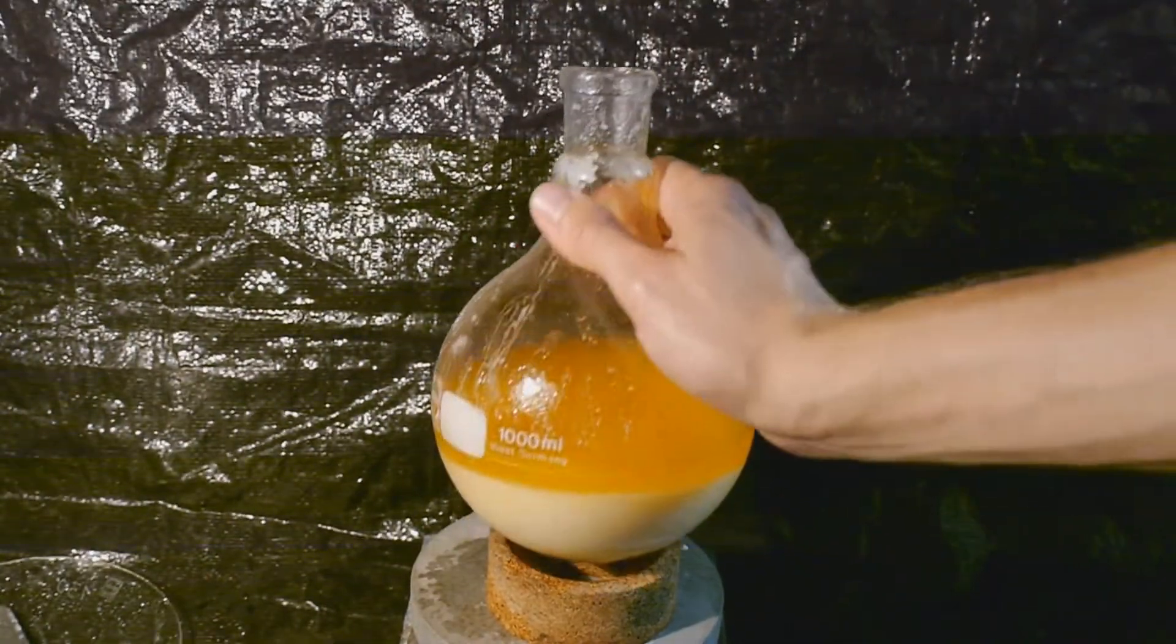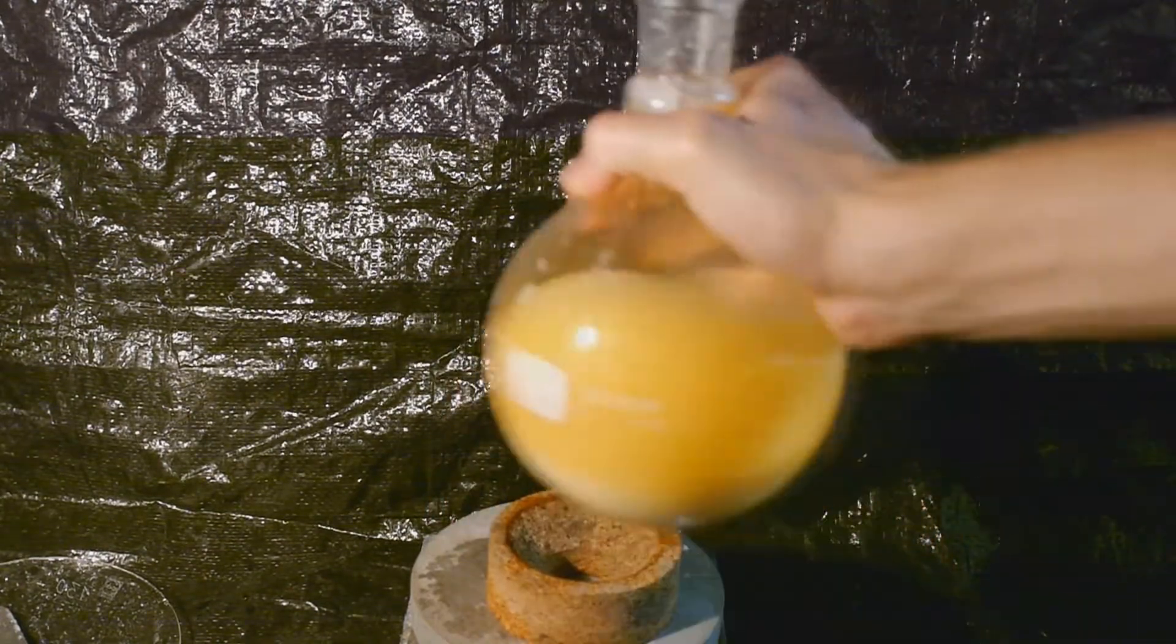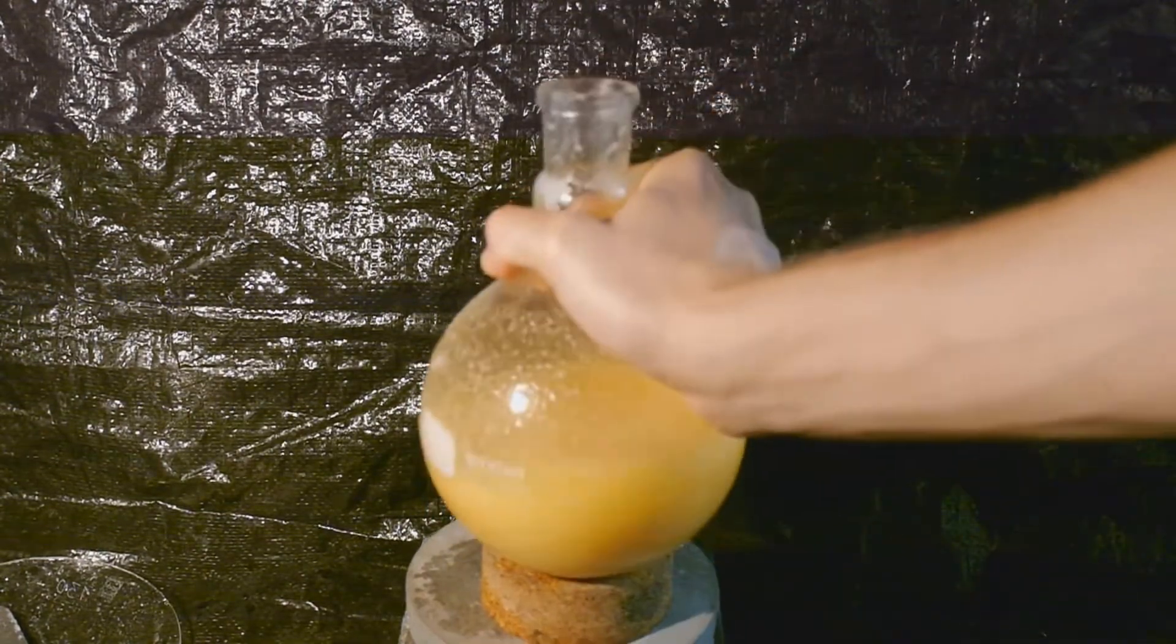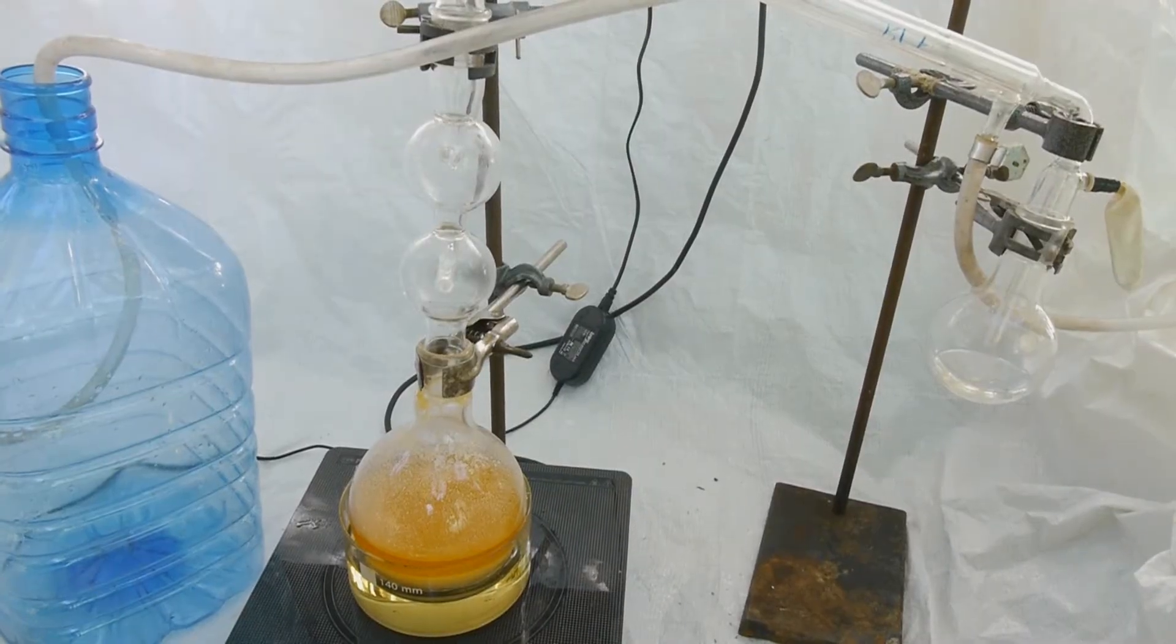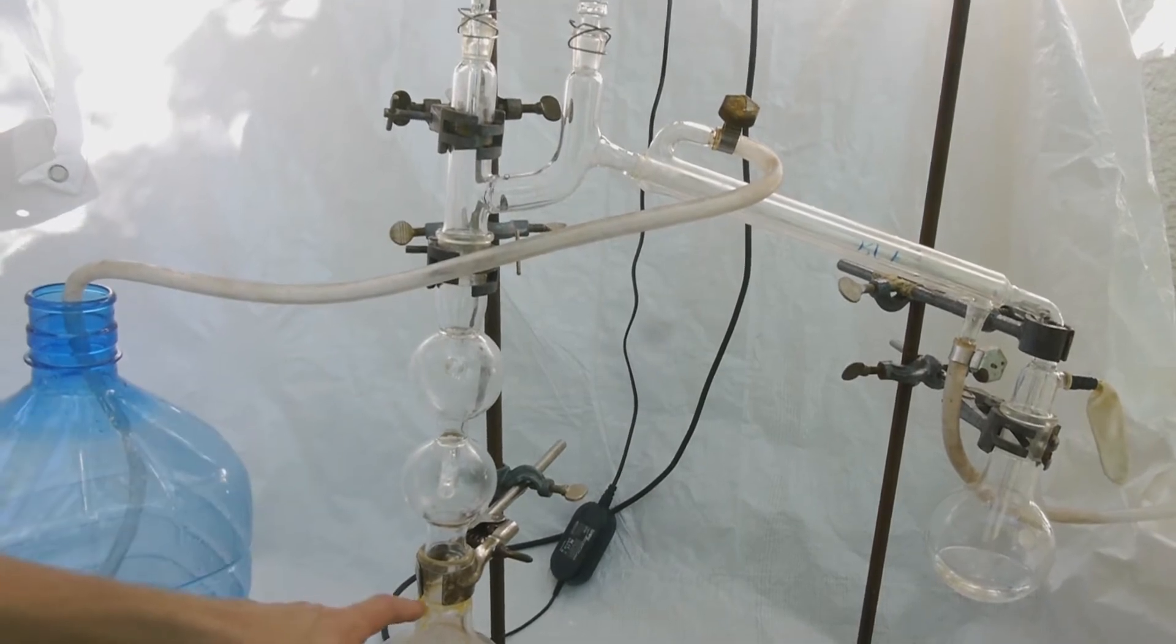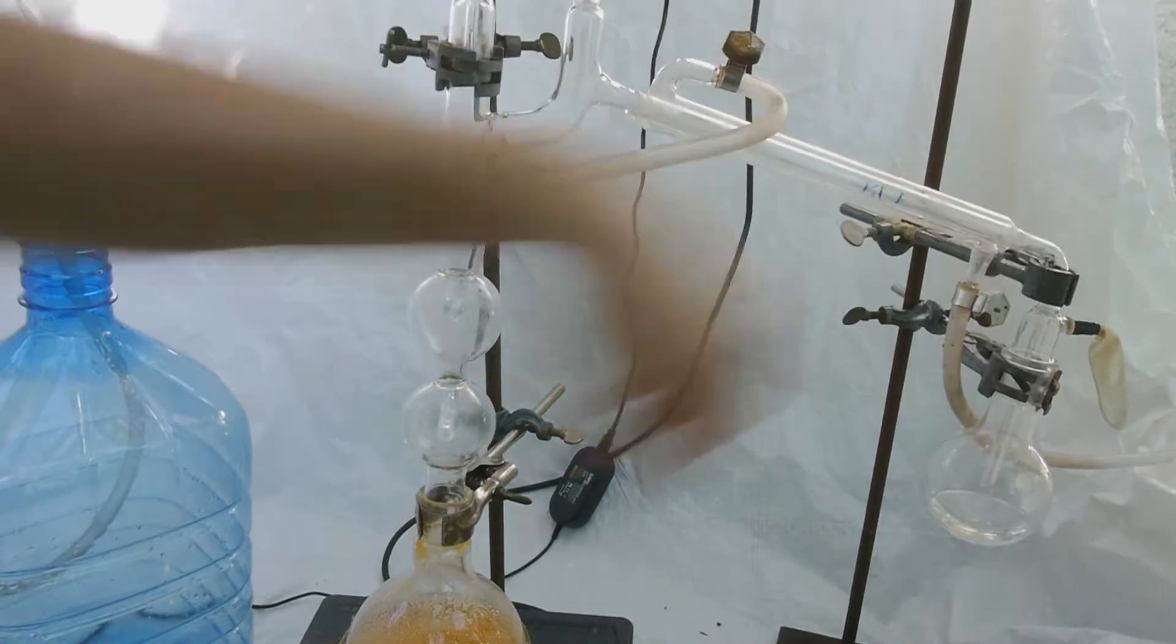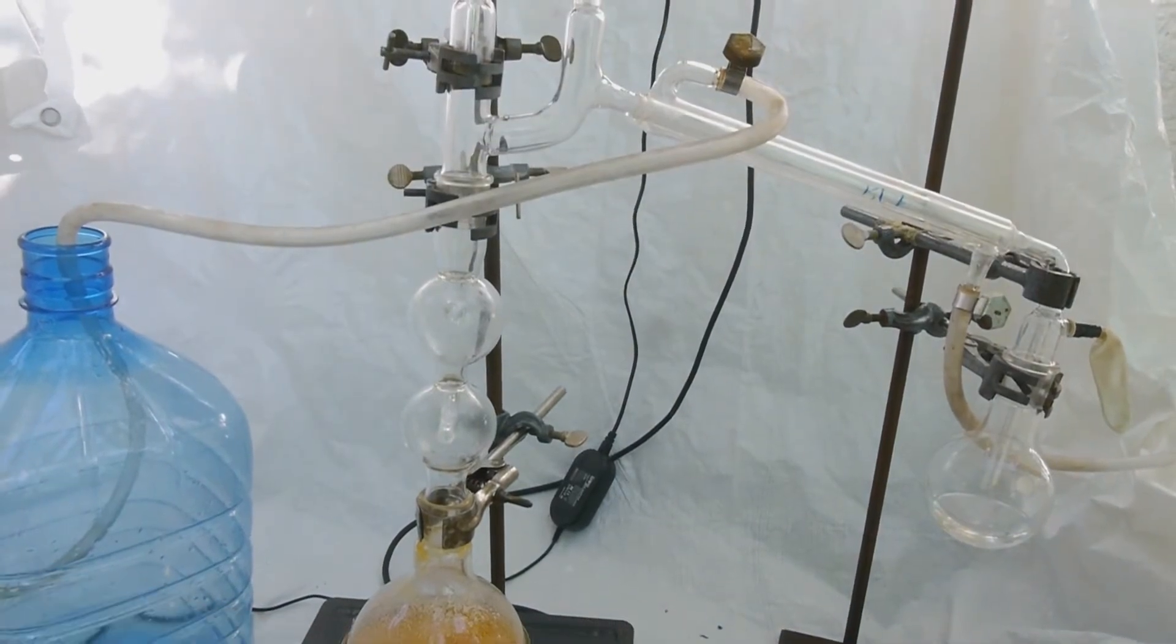Okay, and now this is going to stand overnight so it can hopefully slowly react and form ethyl bromide. I've set up the whole thing for simple distillation now, and because this is so volatile, I've made sure that all the joints are tightly greased and I've put a balloon at the end here and wrapped it around very tightly.